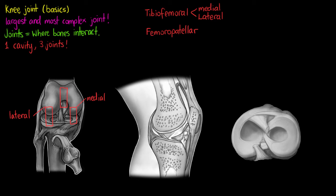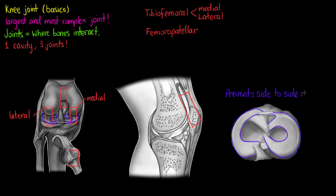The patella interacts with the femur to form our femoropatellar joint, as shown here from multiple views. This area outlined in purple is the meniscus of the knee. The meniscus is important in that it prevents side-to-side rocking of the femur on the tibia, and it also prevents certain motions of the knee joint during certain stages of flexion and extension.